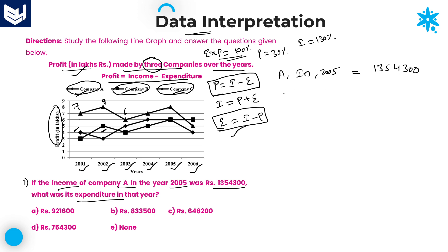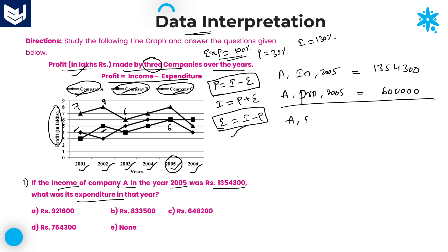The income value is given. Now check what is the profit value of company A in the year 2005. Look at 2005 — company A belongs to the rhombus shape. The rhombus shape and square shape are both at the same line, which is the 6 lakhs line. Therefore, the profit value is 6 lakhs. Now we need to calculate company A's expenditure in 2005.